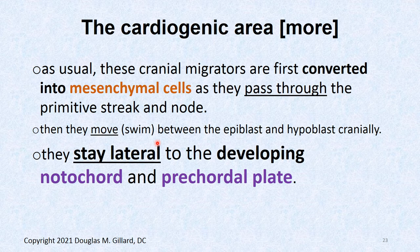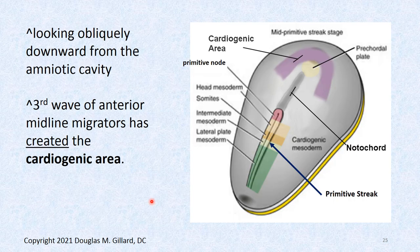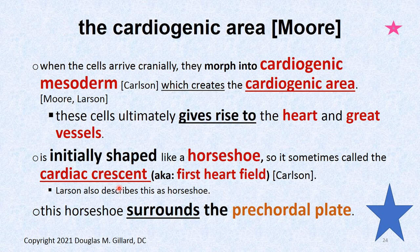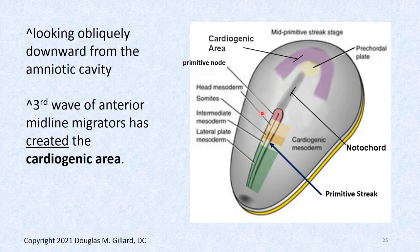These cells are very important because they form the heart, which starts out as a cardiogenic area. They morph into mesenchymal cells, go through the streak, stay a little lateral to the notochord and precordial plate, go above them, and form a little shield known as the cardiogenic area. That's going to morph into the heart. We're looking beneath the ectoderm — the notochord is beneath that as well. The cardiogenic area sometimes looks like a horseshoe, which is why it's called the cardiac crescent, and it does surround the precordial plate.